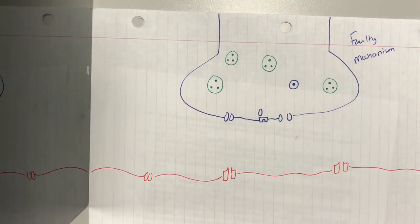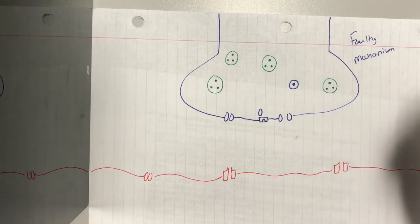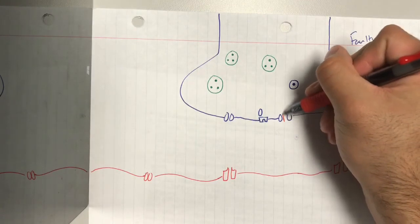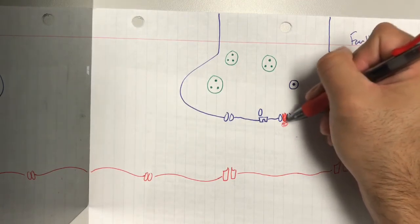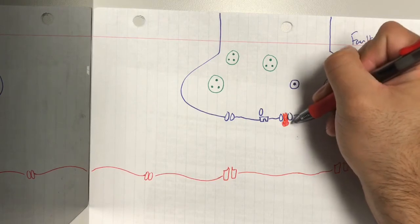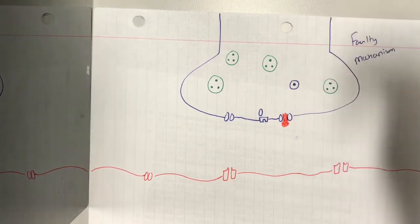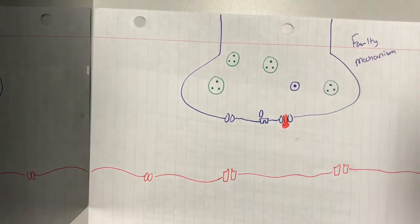Okay, so the first conotoxin that we're going to talk about is the omega one, which is the one with the cysteine bonds that blocks the voltage-sensitive calcium channel. It's going to fit right here. It's going to look like this. It's kind of hydrophobic part and a hydrophilic part. So it's going to block it, prevent calcium from entering.